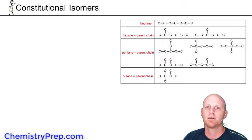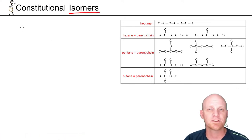So let's talk about constitutional isomers. Now constitutional isomers are isomers, and so first of all, they have to have the overall same chemical formula, same number of each type of atom.